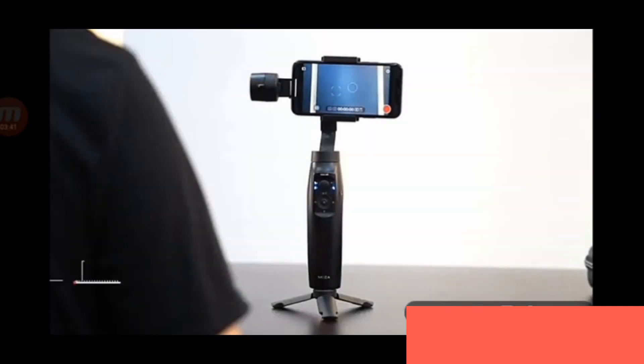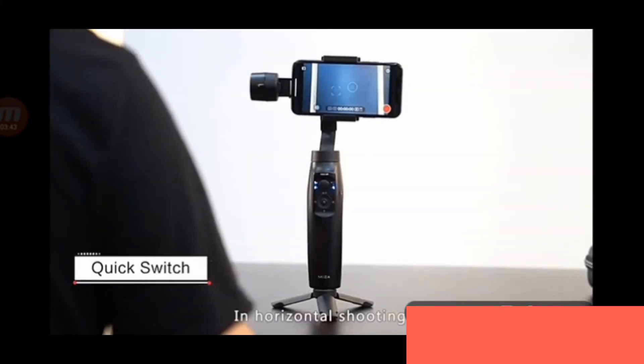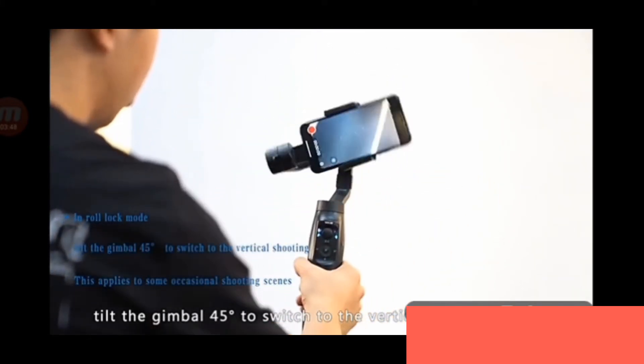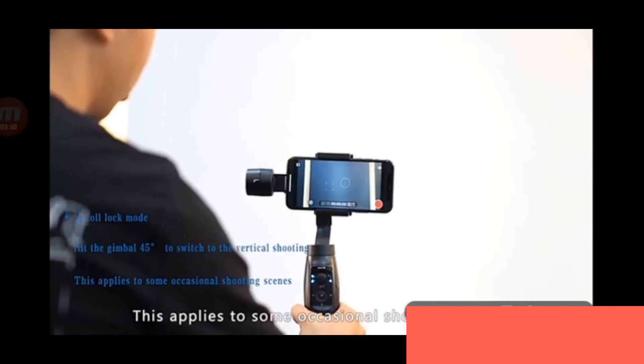Vertical shooting mode - quick switch: in horizontal shooting mode, tilt the gimbal 45 degrees to switch to vertical shooting mode. This applies to some occasional shooting scenes.